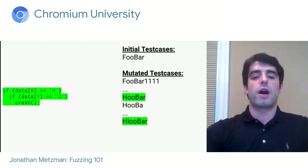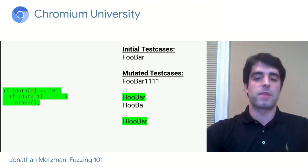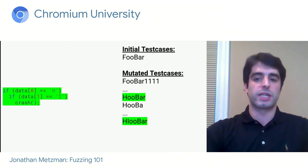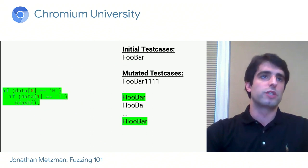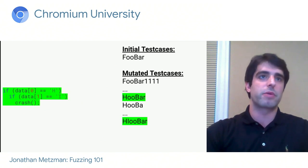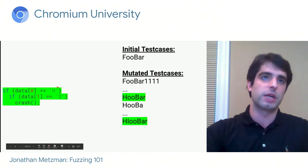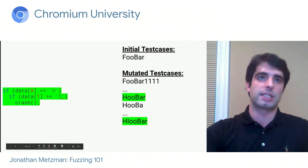I want to point out that this example was a simplification. In reality, the fuzzing engines we use in Chromium can fuzz this code much more easily because those engines have special magic for comparison operations in the program, so they'll learn to produce inputs with H or I much more frequently.